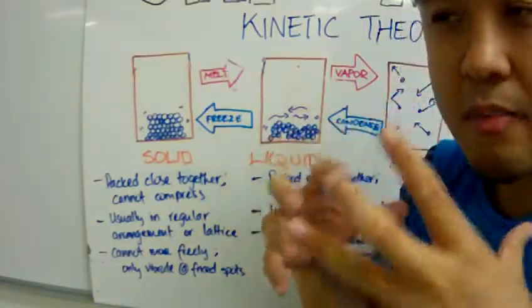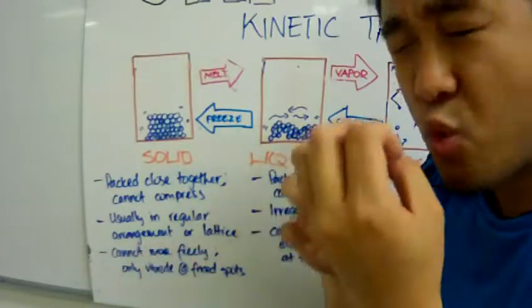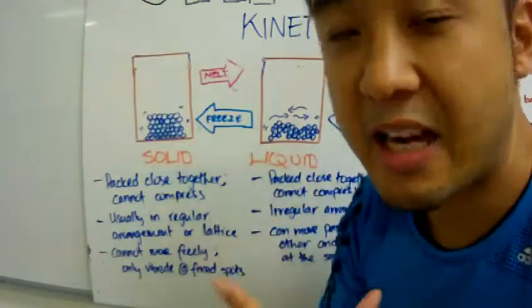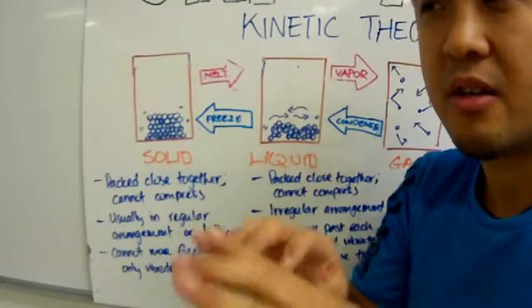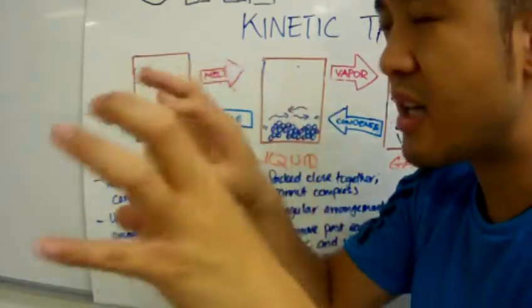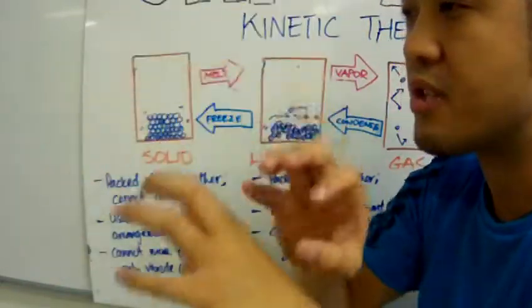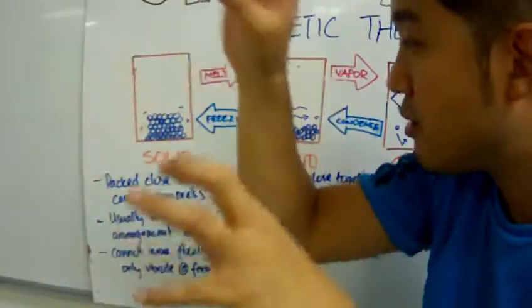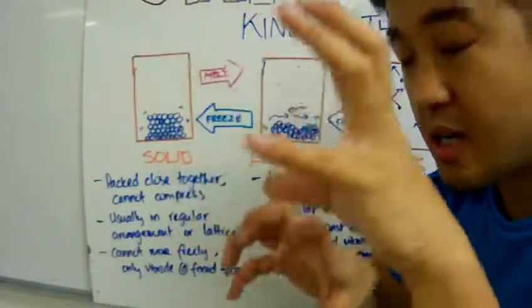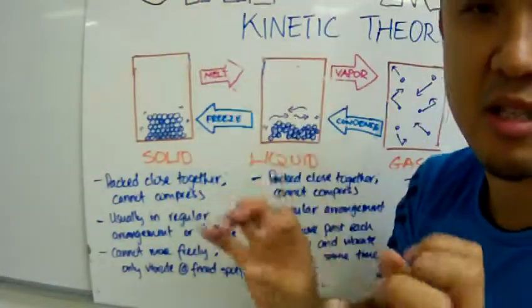When we talk about regular arrangement, we like to use the word lattice. Lattice implies a fixed regular arrangement in terms of rows and columns of these particles. They are very neat.